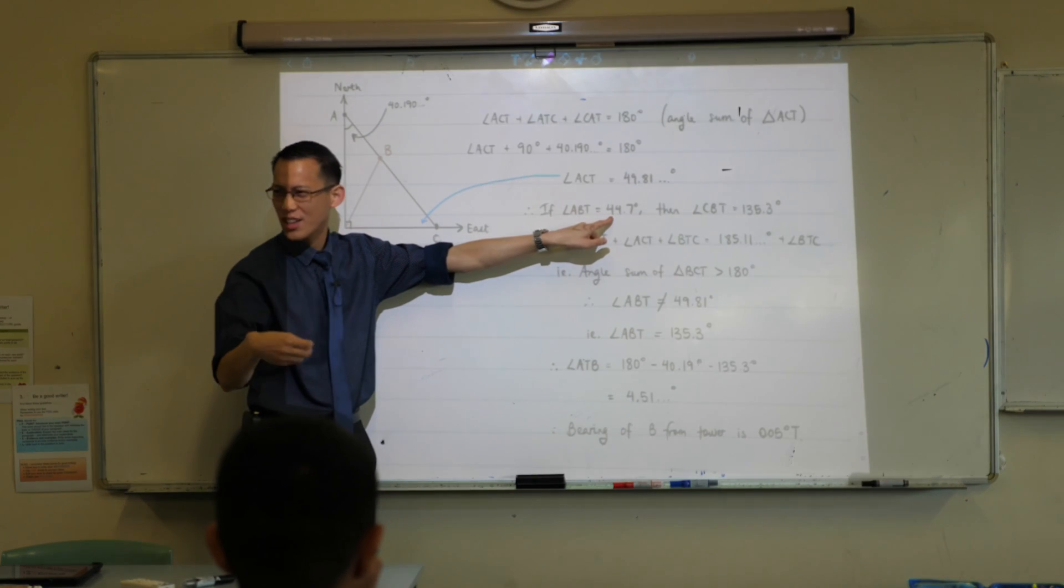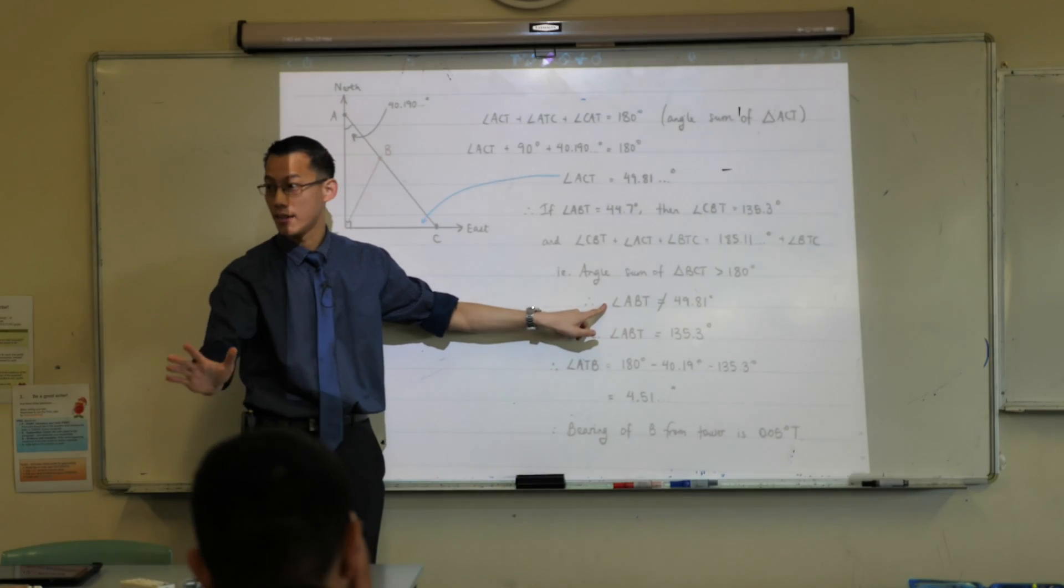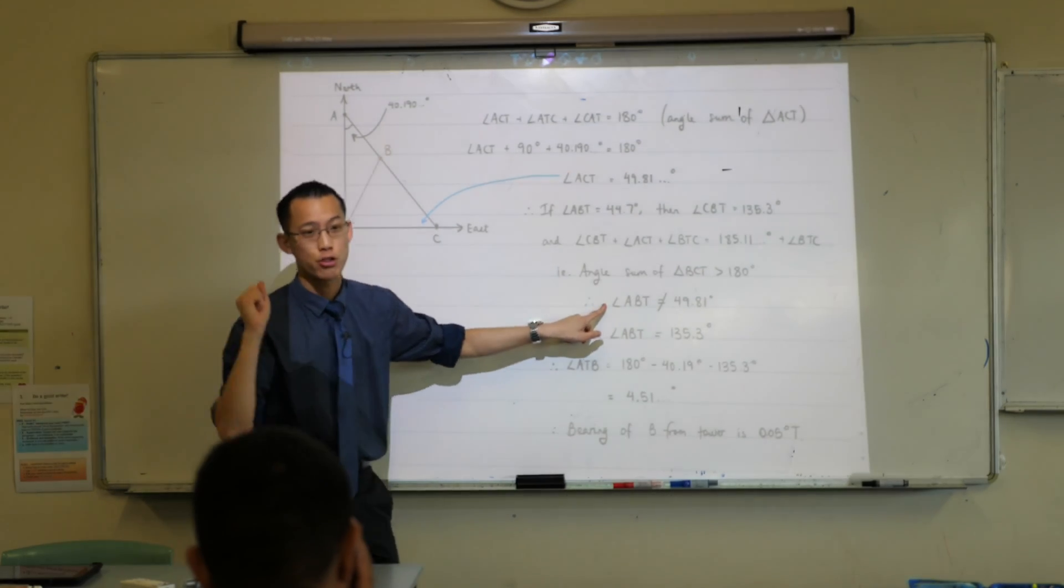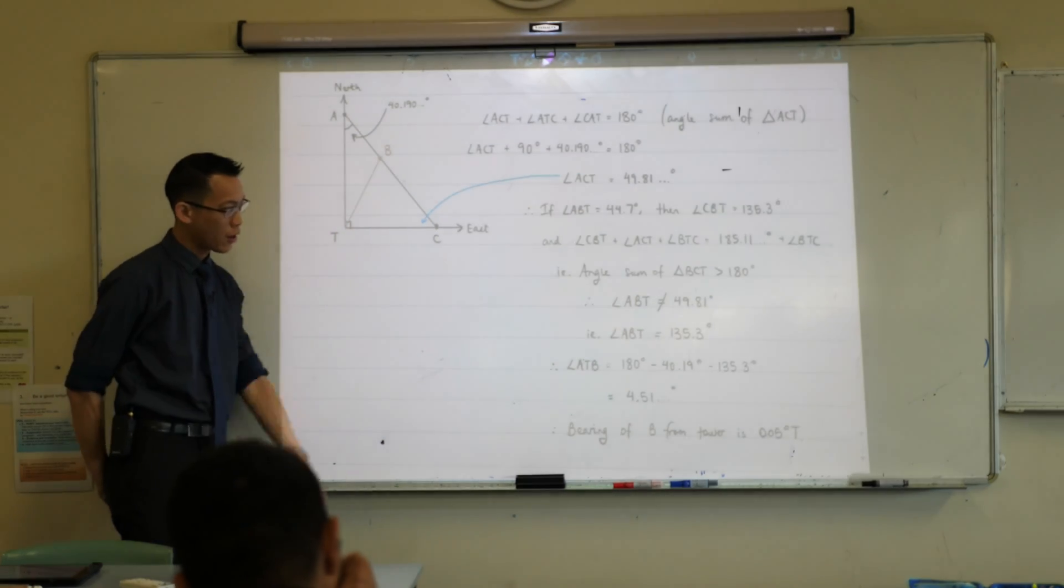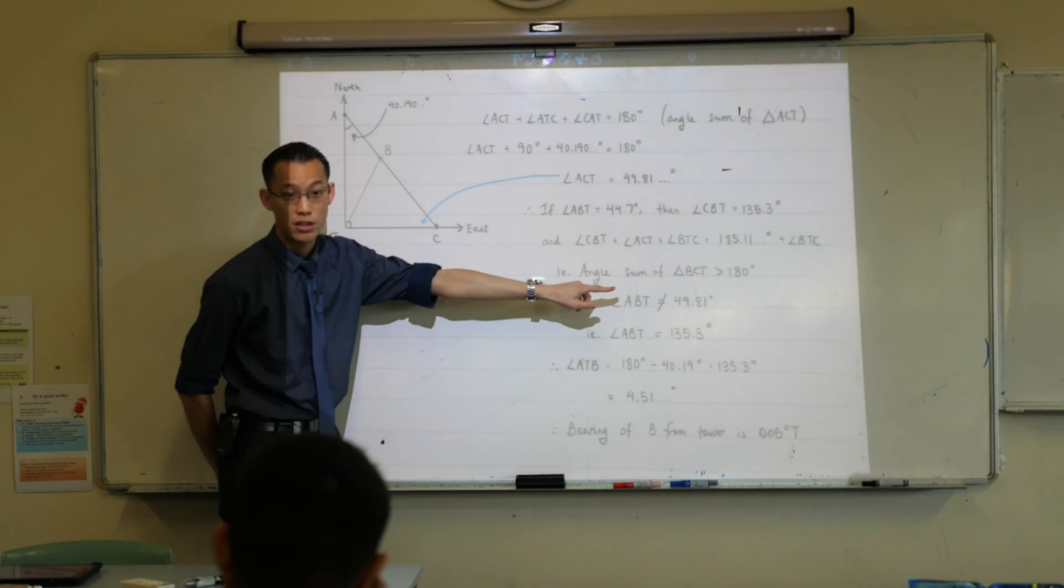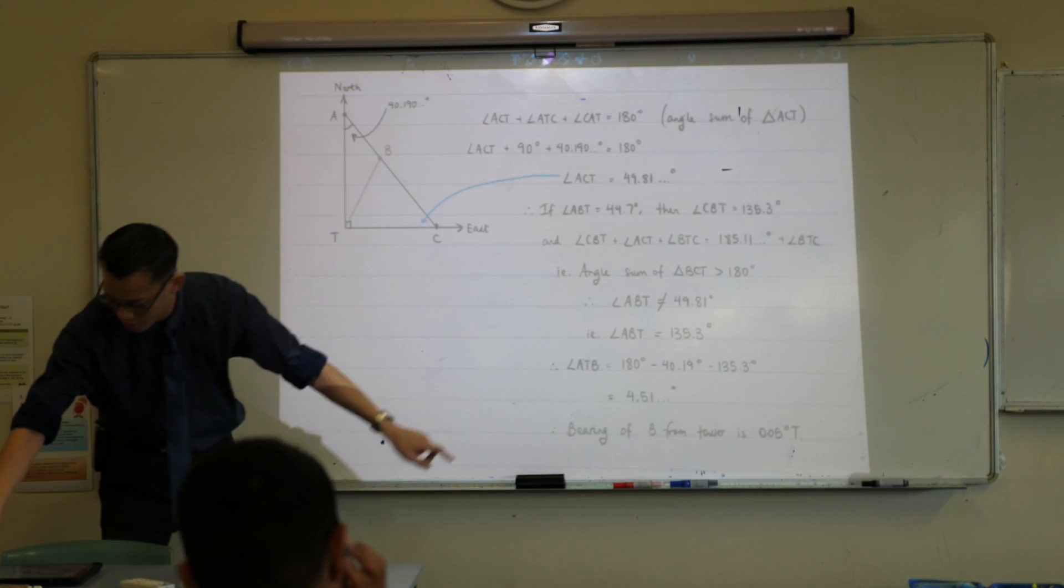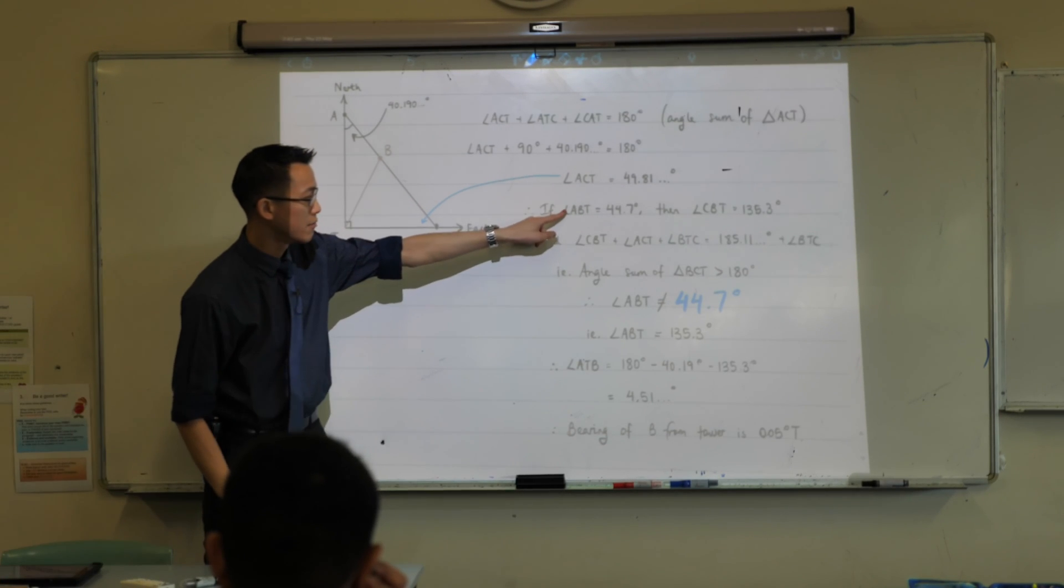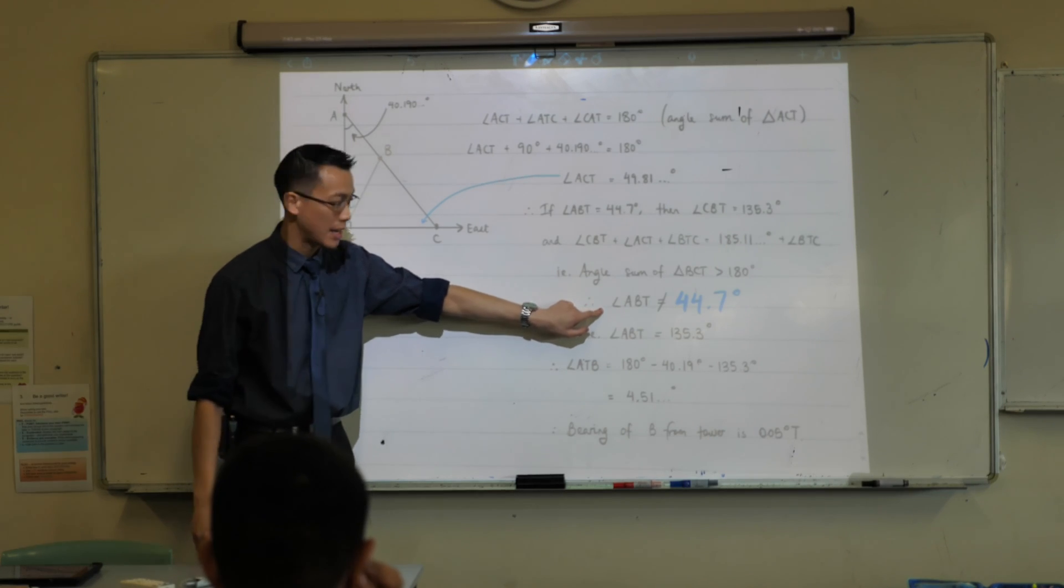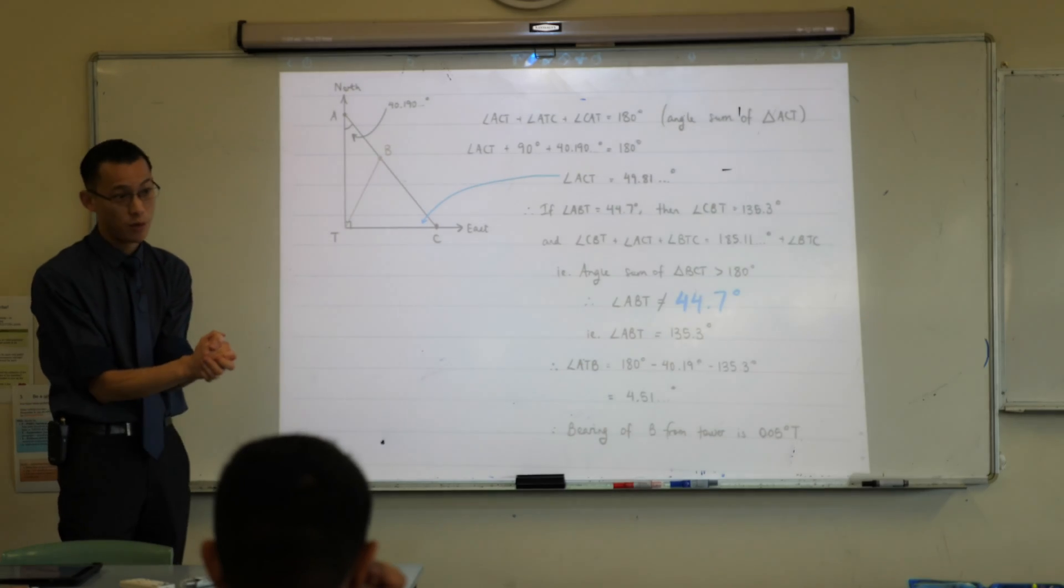So therefore, if thinking about the acute version of the angle breaks things, you're like, no, no, that can't be. That has to be excluded. Does this make sense? I tried out the acute version. It led to an impossible diagram. So therefore, there's only one conclusion I can make. It's not the acute one. It has to be the other one. That shouldn't say 49, I think that should say the 44.7. The 44.7 is what I tried out, but it didn't work. So I said it can't be 44.7. It has to be the other one.